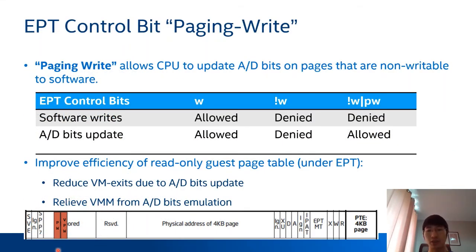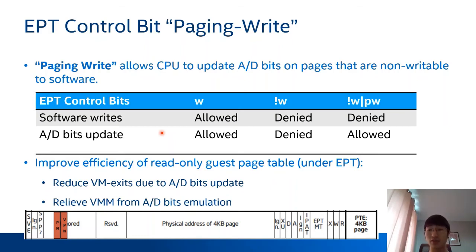Two new EPT control bits are defined in HLAT to track alias mappings. One is Page and Write (PW). PW allows the CPU to update accessed and dirty bits on pages even if they are not writable to software. For example, previously if no write permission is set in the EPT entry, both software writes and accessed/dirty bit updates would be denied and cause an EPT violation. Page and Write introduces a new configuration: if a page is not writable but has the PW bit set, direct software writes are denied but CPU accessed/dirty bit updates are allowed.